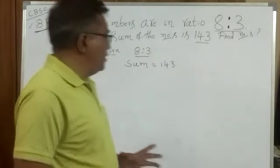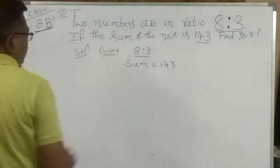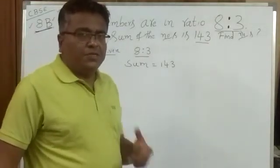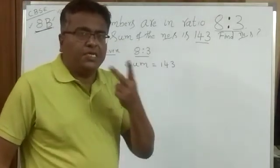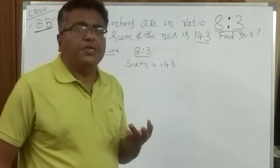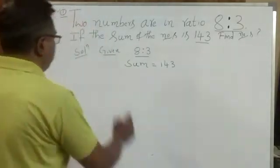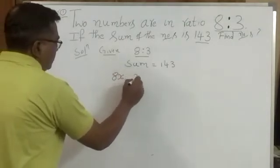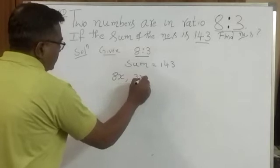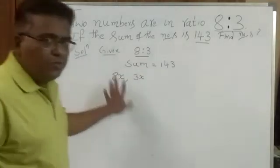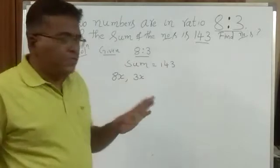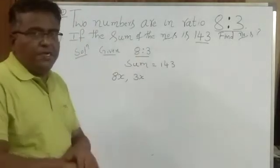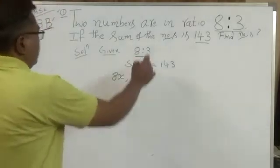The first step in solving this question is we will assume two numbers such that the ratio will be 8 is to 3. The first number I am going to assume is 8x. The next number is 3x. These are the two numbers which I have assumed. It is in the ratio of 8 is to 3.